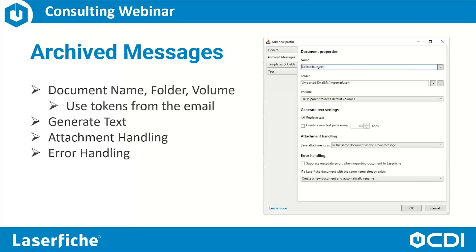Under the Archived Messages tab, we can configure the document name, import folder, and volume. Again, we can use a combination of static text and/or tokens. When importing emails, we also have the ability to access information from the email header, such as the To address, To name, From name, sent date, and more.